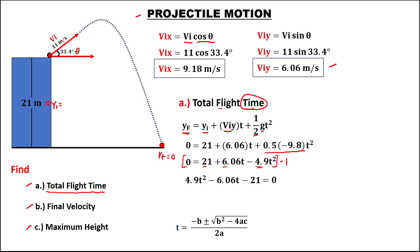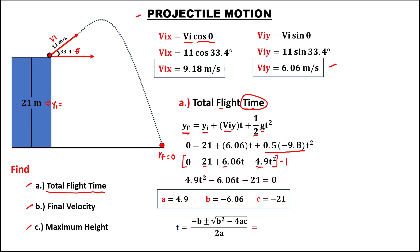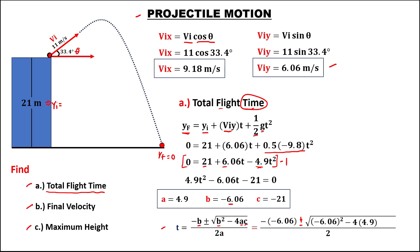Using the quadratic equation where a equals 4.9, b equals negative 6.06, and c equals negative 21, we substitute into the quadratic formula. So we have minus b — b is negative 6.06 — plus or minus the square root of b squared, where b is negative 6.06 quantity squared, minus 4 times a (4.9) times c (negative 21), over 2 times a, or 2 times 4.9.